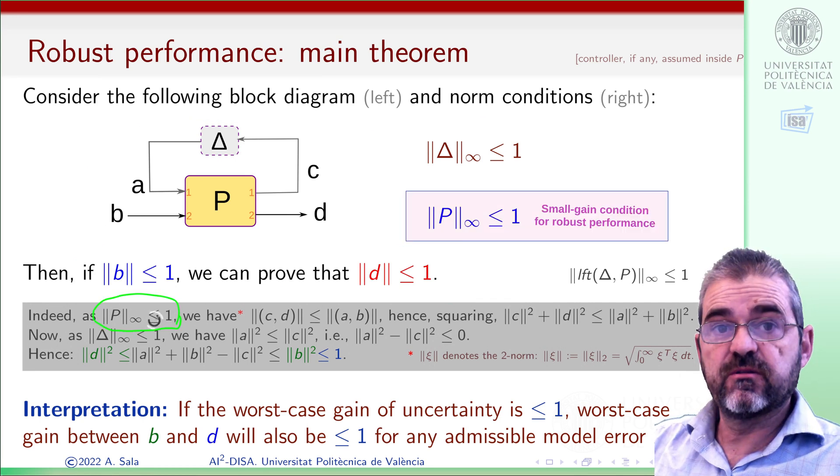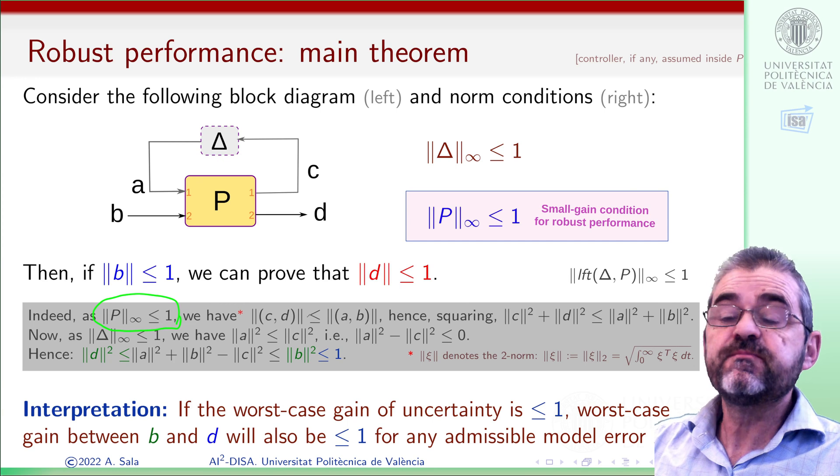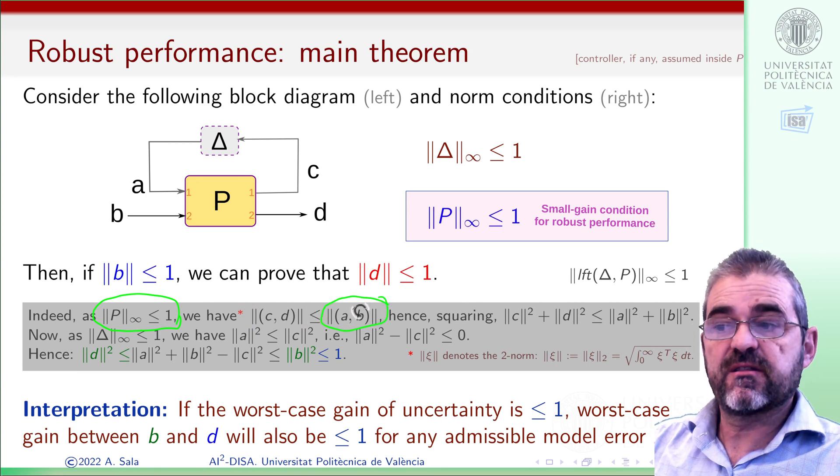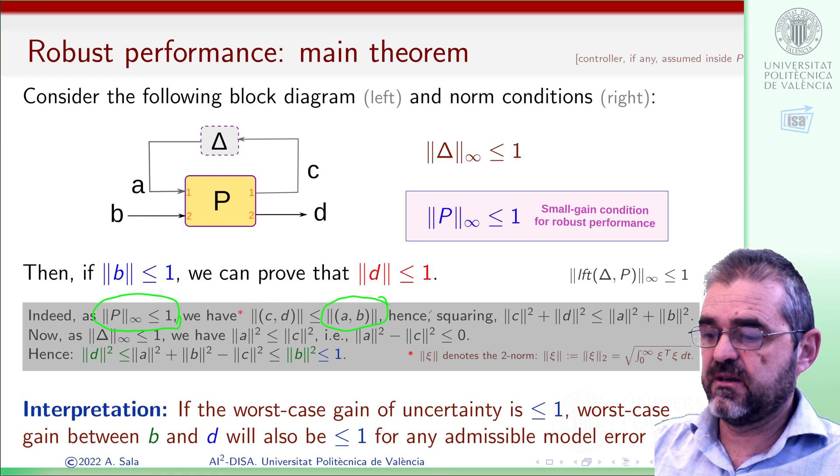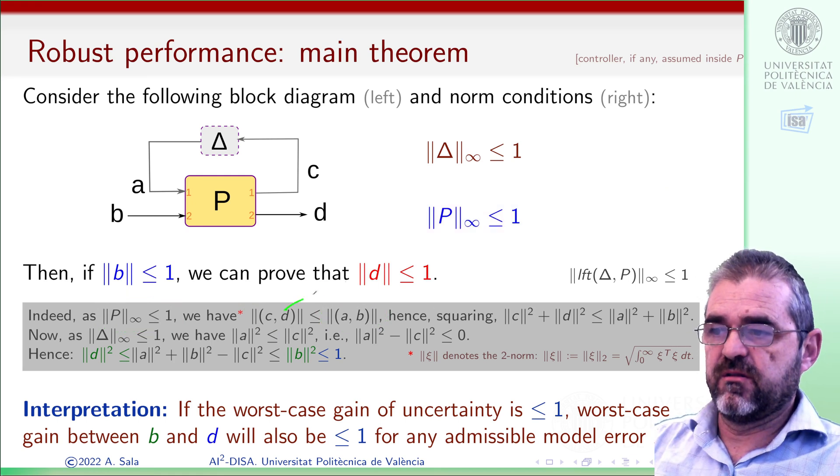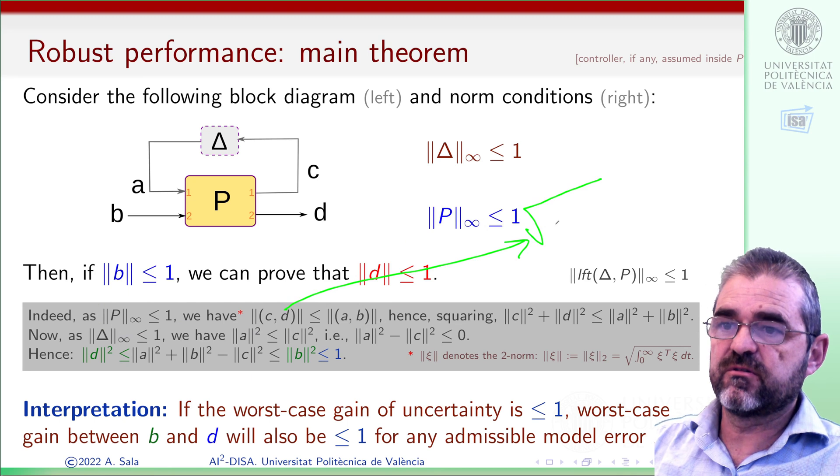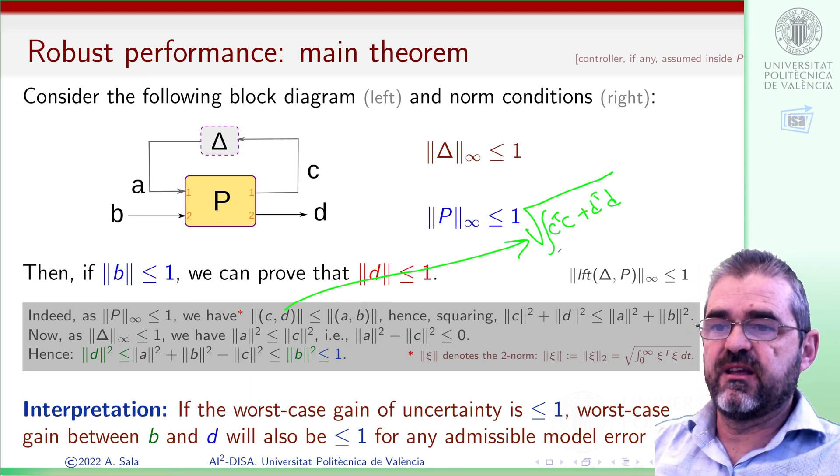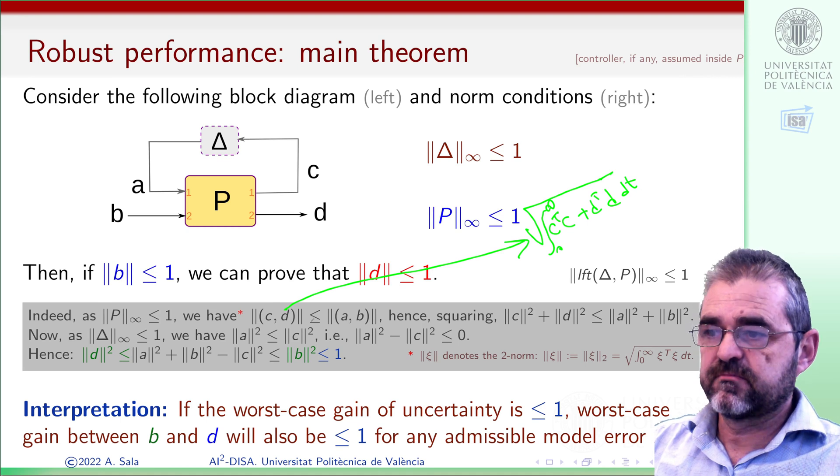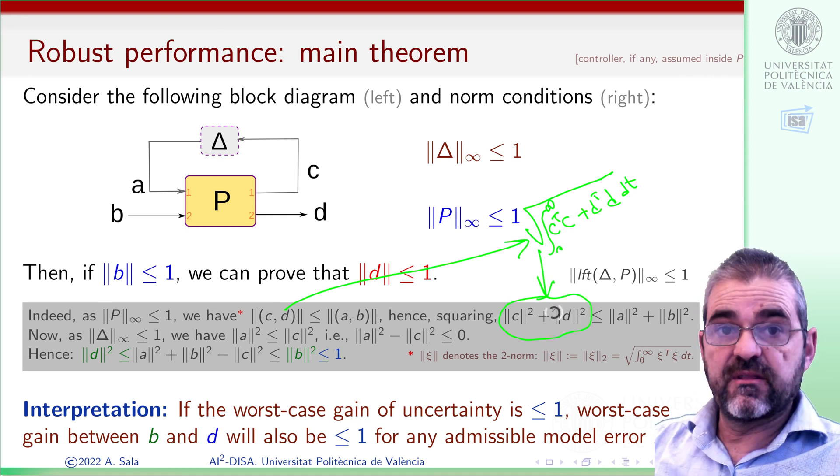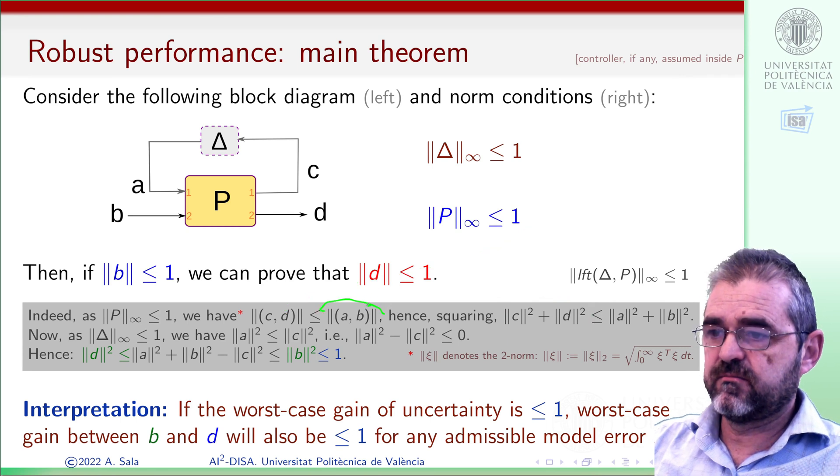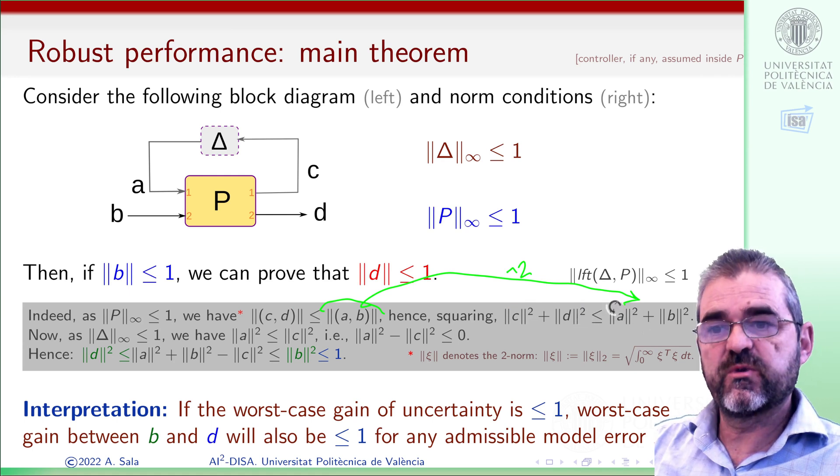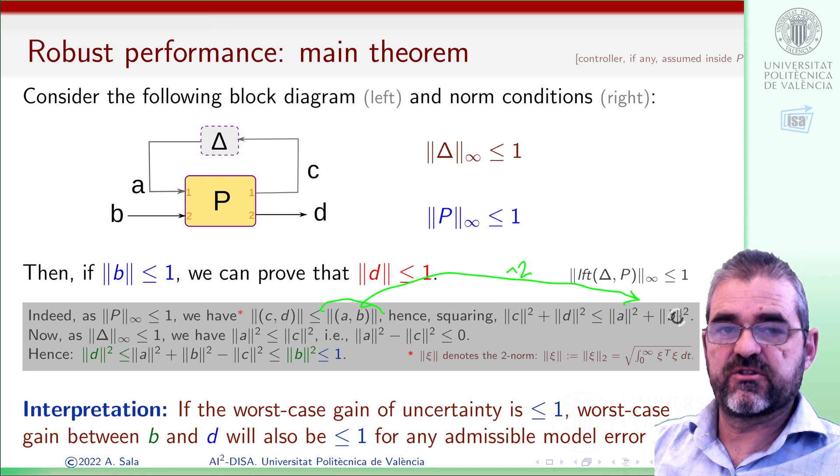What does this condition, gain of P less than 1, mean? Well, it means that the norm of vector CD of the output is less than the norm of the input vector AB in here. But the norm of vector CD is the square root of C transpose C plus D transpose D, actually the square root of the integral of it. So squaring this inequality, we get that the left-hand side is this thing, and the right-hand side is that thing. So the norm of C squared plus norm of D squared is lower or equal than norm of A squared plus norm of B squared.